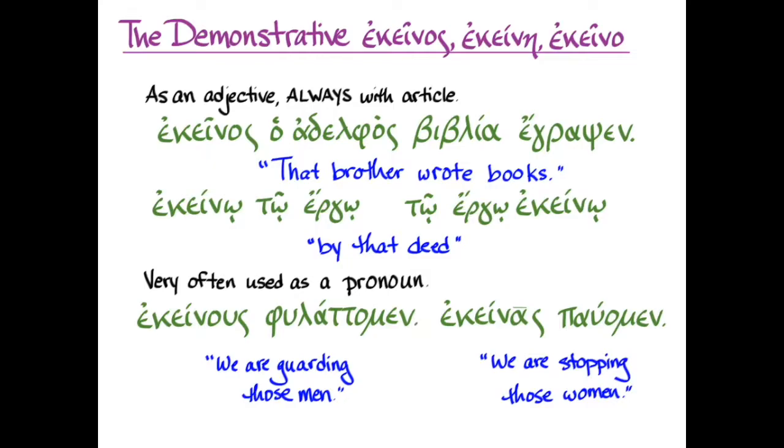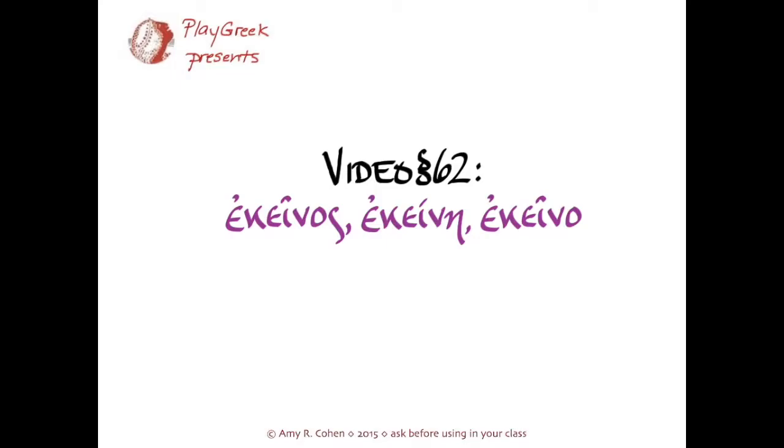So the demonstrative ἐκεῖνος, ἐκείνη, ἐκεῖνο can be an adjective, directly modifying a noun and highlighting it, pointing it out, pointing to it, demonstrating it, you could almost say. And if you do that, it always comes with the article and that noun, and it comes before the article. And very often ἐκεῖνος, ἐκείνη, ἐκεῖνο will be simply a pronoun, pointing out those people or those things. And I think that should be enough to get you started on this new kind of word, and enjoy practicing it.